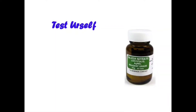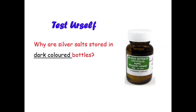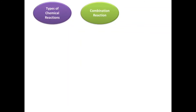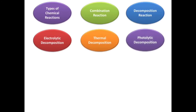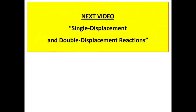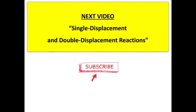Now all are familiar with the different types of decomposition reactions based on the source of energy involved. Here is a test yourself question: why are silver salts stored in dark-colored bottles? Kindly type your answers in the comment section. In this video we have seen types of chemical reactions — combination reaction, decomposition reaction, and its types: electrolytic decomposition, thermal decomposition, and photolytic decomposition. In the next video I'll be teaching you the difference between single displacement and double displacement reactions. If you like my video, kindly subscribe to my channel. Thank you.